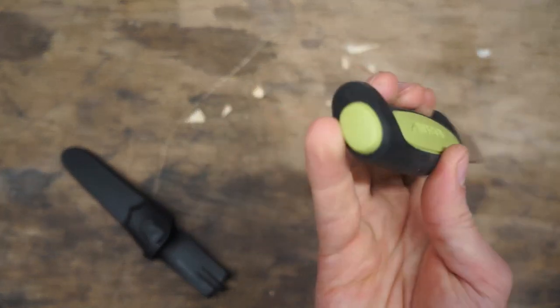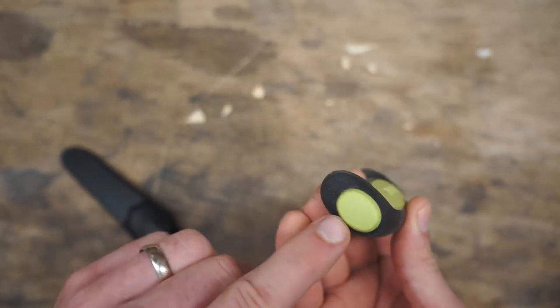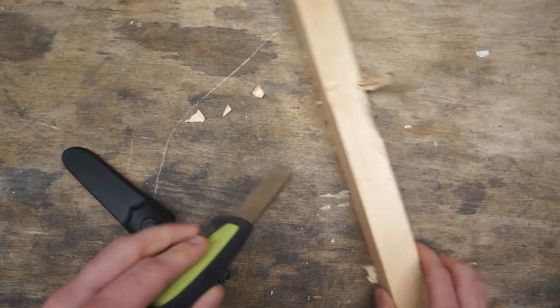Now the one disadvantage that I will say about this is it's not a full-tang knife. So it does have this hard plastic pommel at the end here. So in theory, you can get away with a little bit of light striking to it.